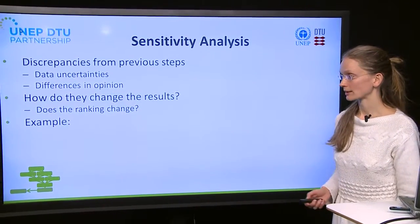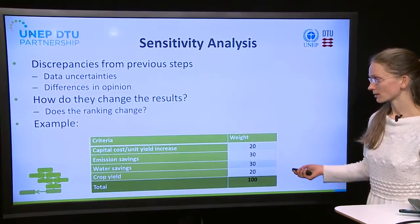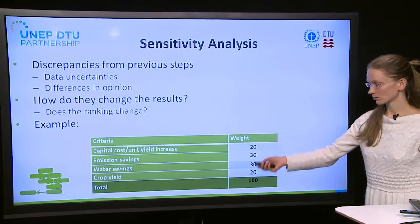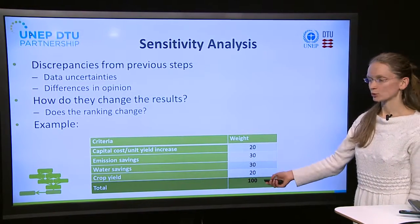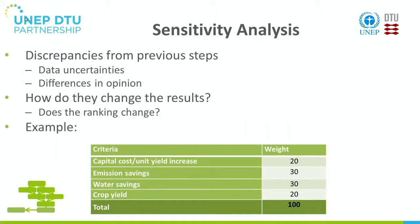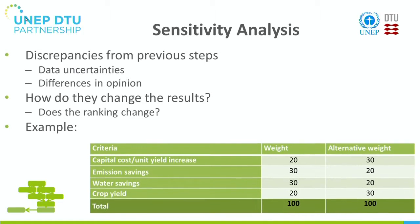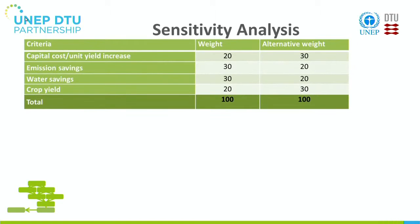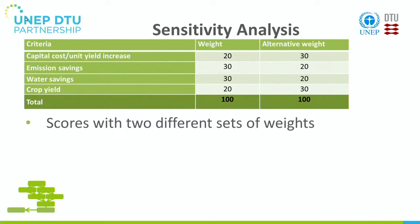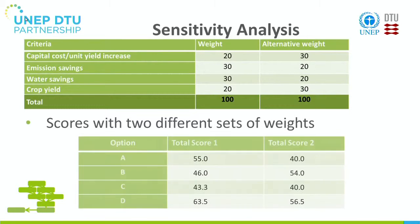I'll illustrate it with an example. Let's say that the majority of stakeholders agreed with these weights that we used before in the example, but there were a few who thought that the alternative weights as shown here were better. What would happen to our scores if we use these alternative weights? Let's calculate the scores with two different sets of weights — the original one and the alternative one.